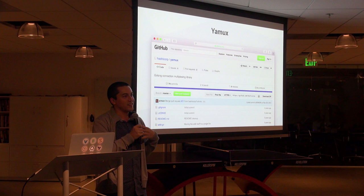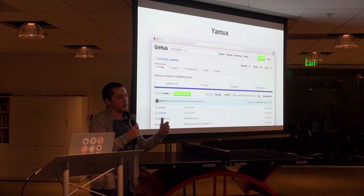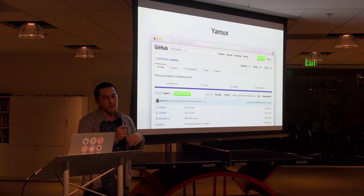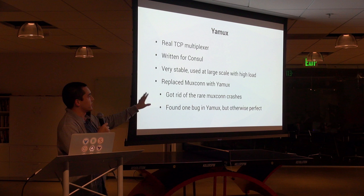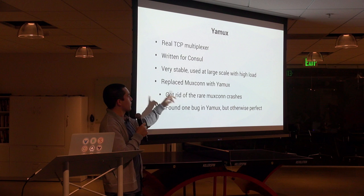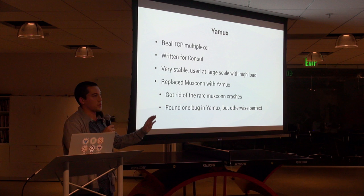The first thing we did was replace MuxCon with something called Yamux. Yamux was also written by us, but by Armon, who's a lot smarter than me. It was written for Consul, which is a high-performance server-side component that really can't crash. He looked at the same TCP diagram and implemented it into something we call Yamux. He was going to use MuxCon and I said no. So he wrote Yamux, and it's now used in all of our tools. It's a real TCP multiplexer — not TCP-ish, it is definitely TCP. Written for Consul, very stable.